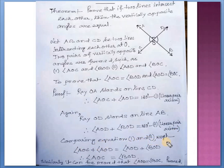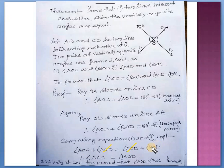Now comparing equations 1 and 2, we get: angle AOC plus angle AOD equals angle AOD plus angle BOD. Since 180 equals 180, we can cancel angle AOD from both sides. What remains is angle AOC equals angle BOD. Similarly, it can be proved that angle AOD equals angle BOC. These two are vertically opposite angles. Hence proved.